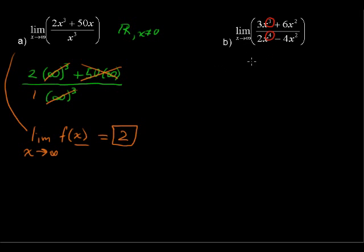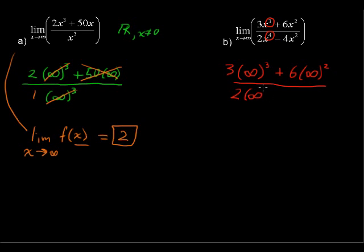Let's again look at what happens when we plug in infinity. Again, infinity is not a number, but let's think of a really huge number. So we get 3 times infinity to the third power plus 6 times infinity squared, all over 2 times infinity to the fourth minus 4 times infinity squared. Next to an enormous number to the third power, the second power term doesn't mean much — we can ignore it because it's insignificant compared to infinity cubed.